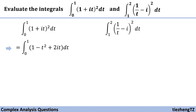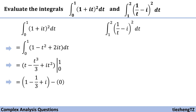Next we need to find the antiderivative of each part within the parentheses. The antiderivative of one is t, and the antiderivative of -t² is -t³/3, and the antiderivative of 2it is i·t². The next step is to substitute using one and zero individually.